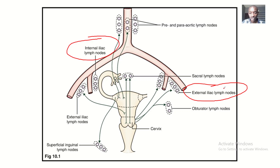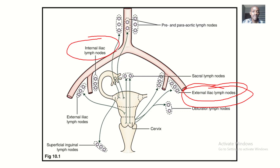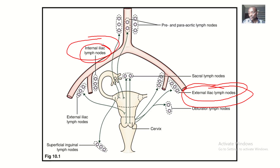Here we have the external iliac lymph nodes at the same position where the external iliac arteries are — that is why we say they follow the arterial supply. Similarly, here we have the internal iliac lymph nodes, and around the bladder we also have the internal iliac arteries, meaning these lymph nodes also follow the arterial supply.